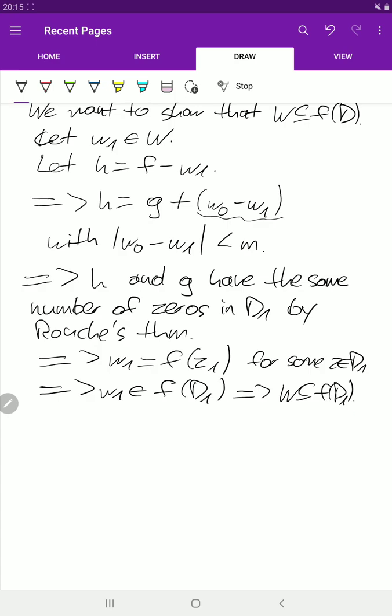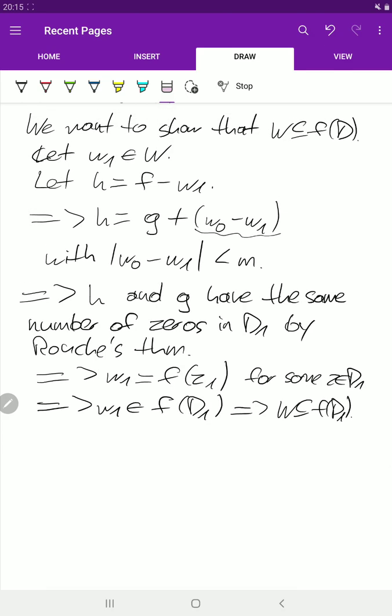And so W is a subset of the image of D1. Well, D would have been enough, but that also works.